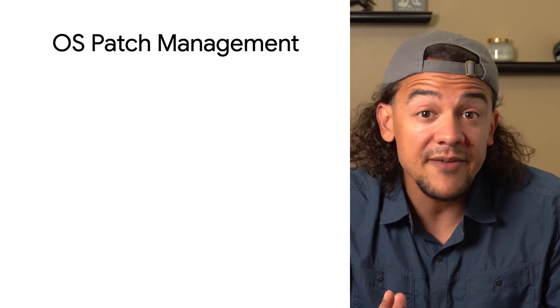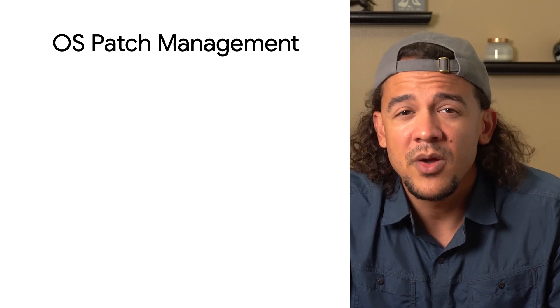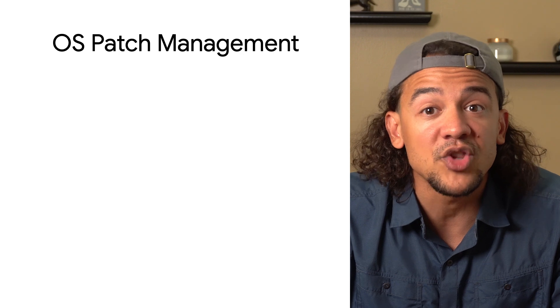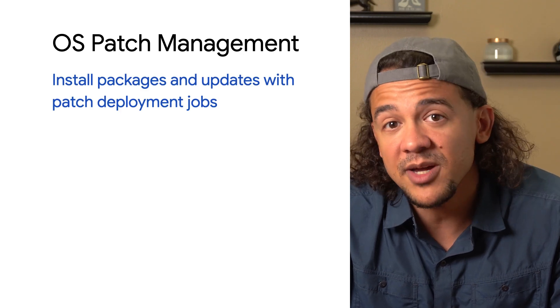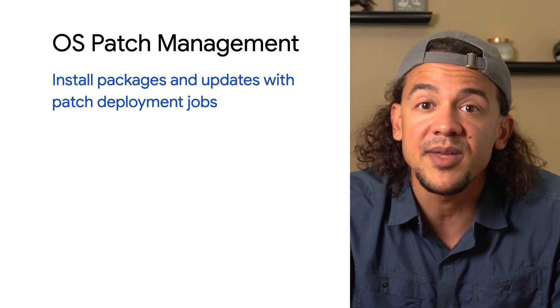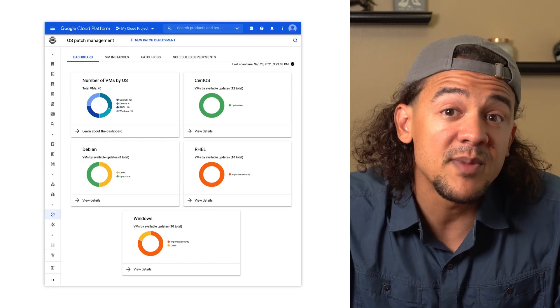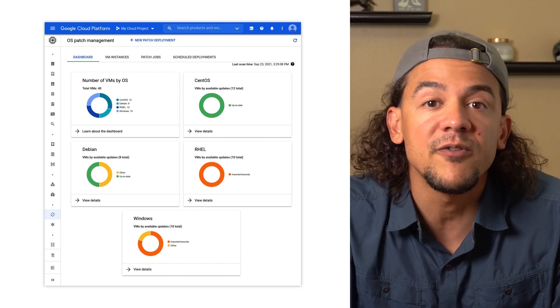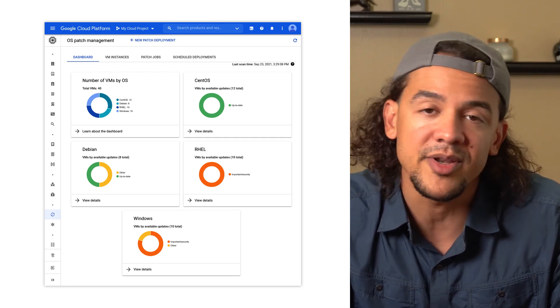Next, we have OS patch management. While OS inventory management will tell you what's installed, where, and which updates are pending, OS patch management is going to let you install packages and updates through patch deployment jobs. The OS patch management dashboard will help you visualize your fleet and identify how many are ready for updates, broken down nicely by operating system. The dashboard helps you clearly identify the machines in your fleet that have important security updates, so you'll never miss a beat when keeping the machines secure.